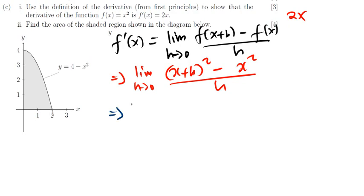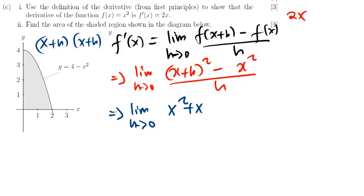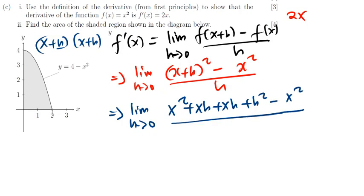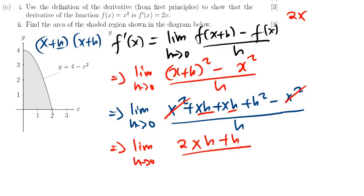Continuing: limit as h approaches 0. I can expand (x+h)² as (x+h)(x+h). So x times x gives x², x times h gives xh, h times x gives xh, and h times h gives h². That gives x² + 2xh + h², minus the original x², all divided by h. The x² terms cancel.